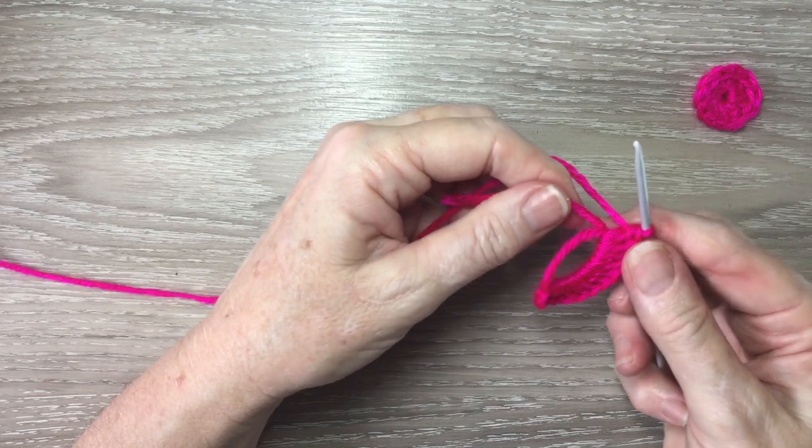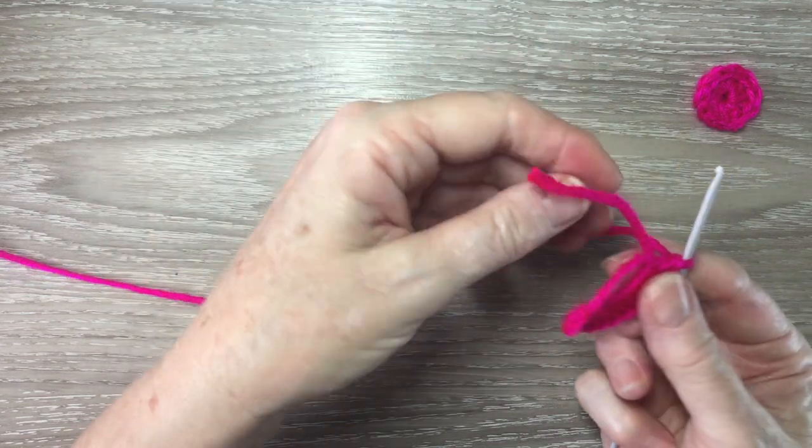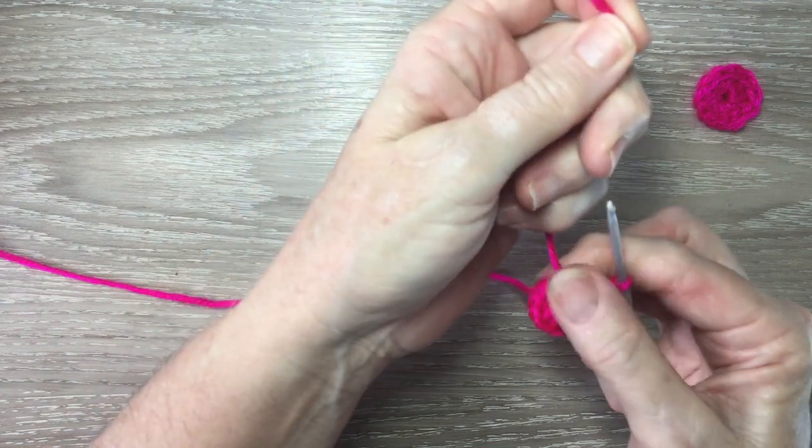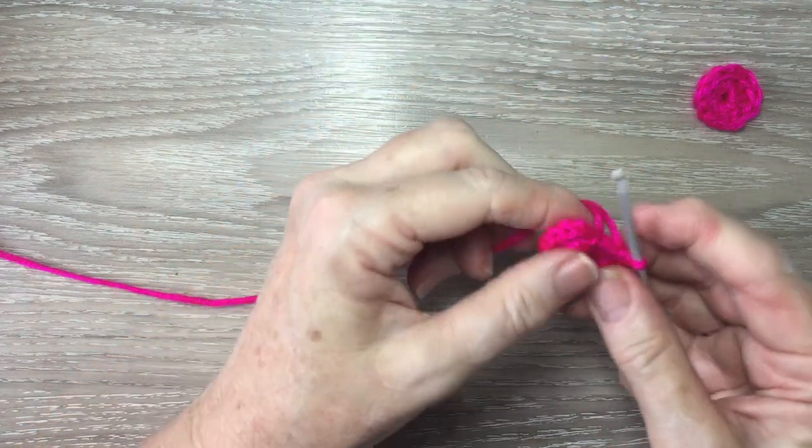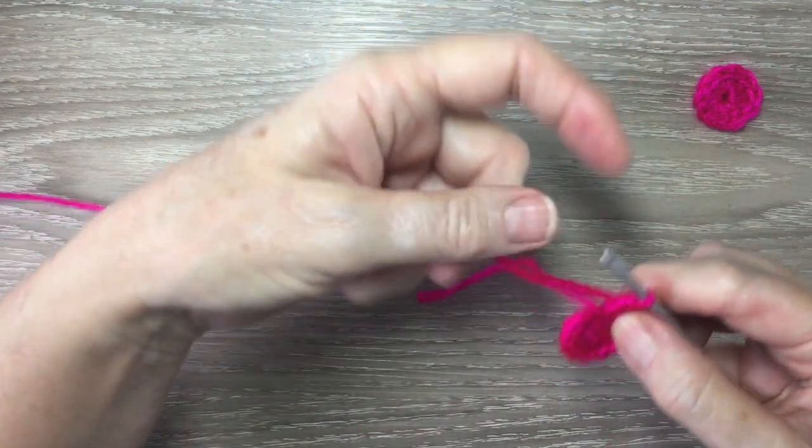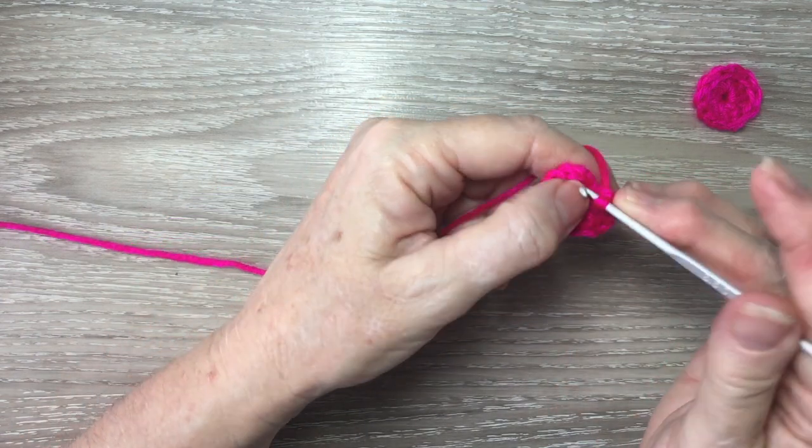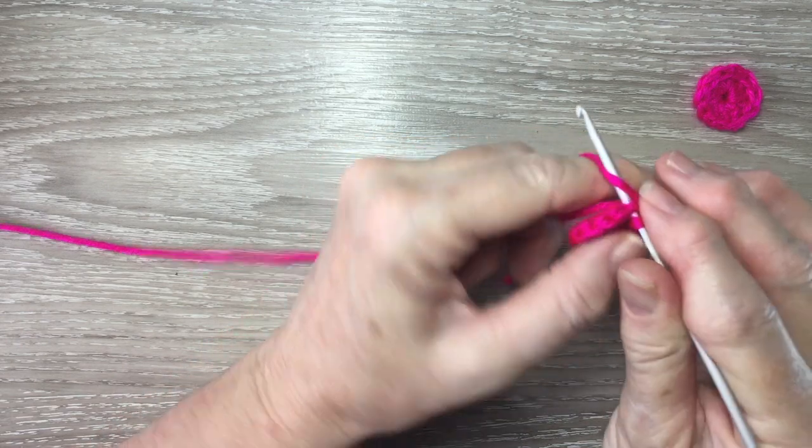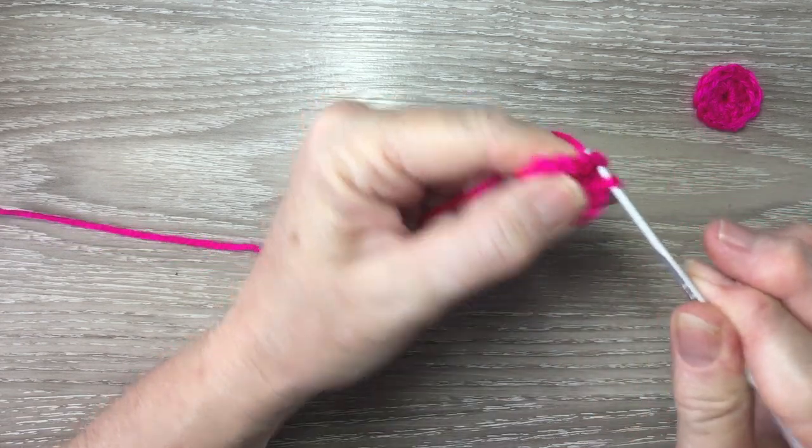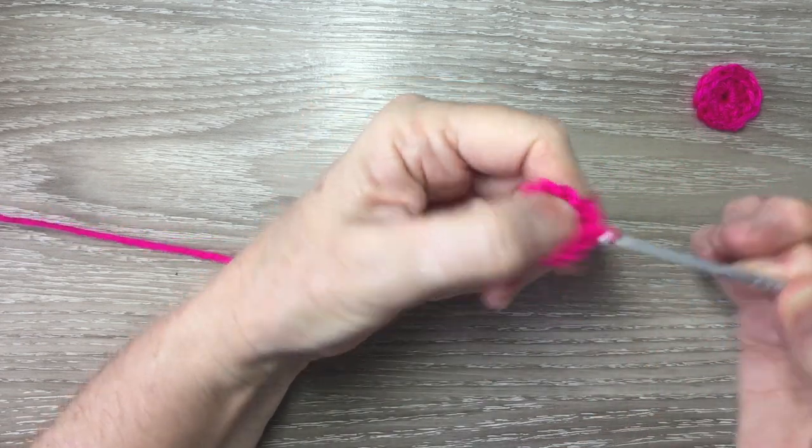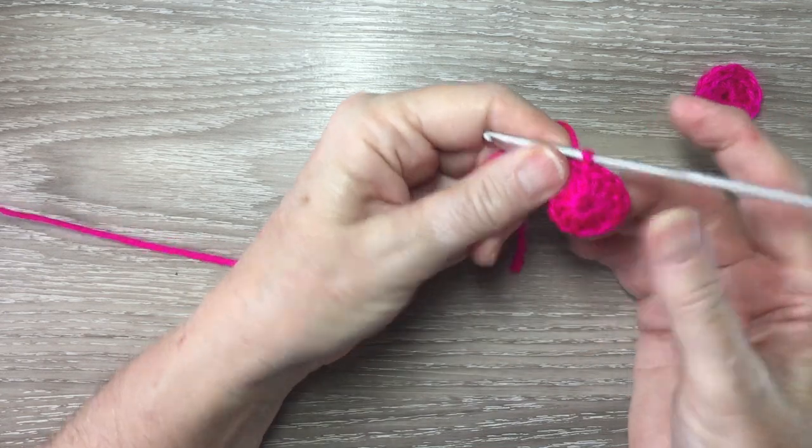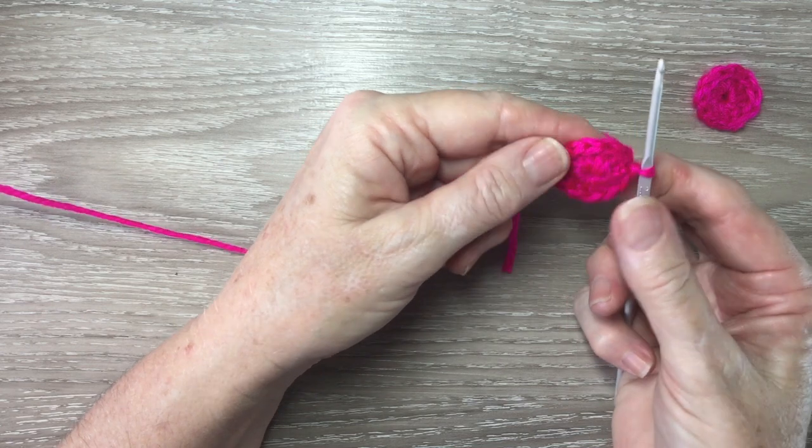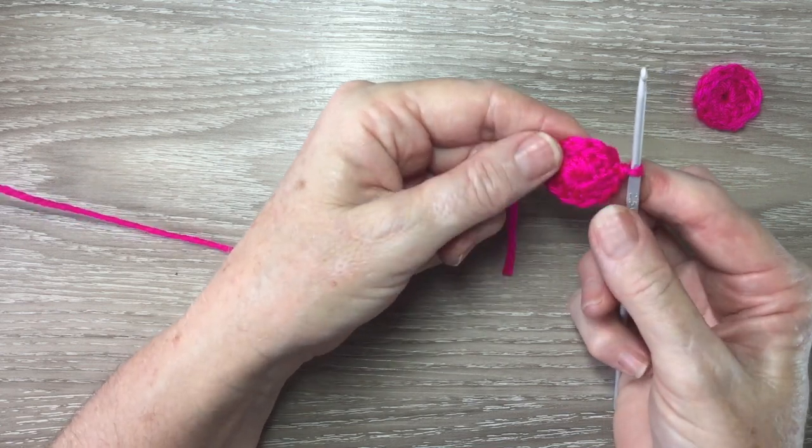And when I've got the desired amount of double crochet, I take hold of the tail and I pull it tight, and then I work a slip stitch into the top chain. So just in there, I just pull my yarn through and work a slip stitch, and that's the magic circle and the first row done.